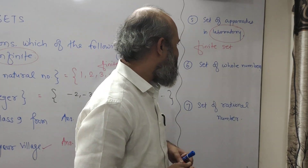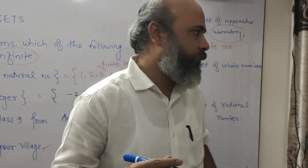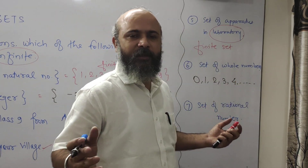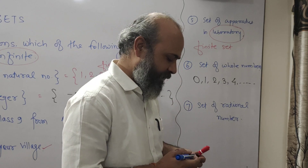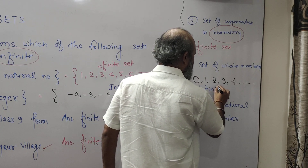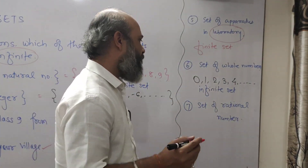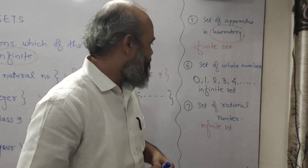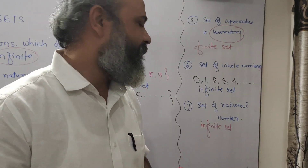Sixth one is the set of whole numbers. The set of whole numbers starts from 0, 1, 2, 3, 4 and so on. Whole numbers cannot be counted — they go on forever. So this is an infinite set. Similarly, the set of integers is also an infinite set because the elements of this set cannot be counted.